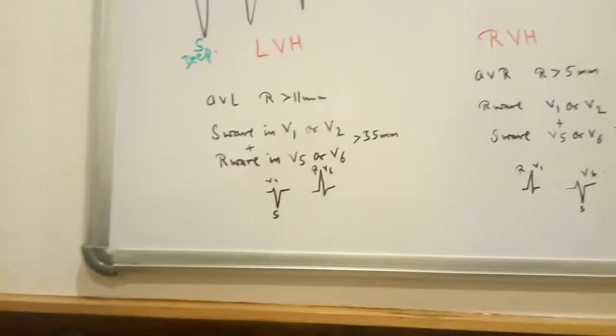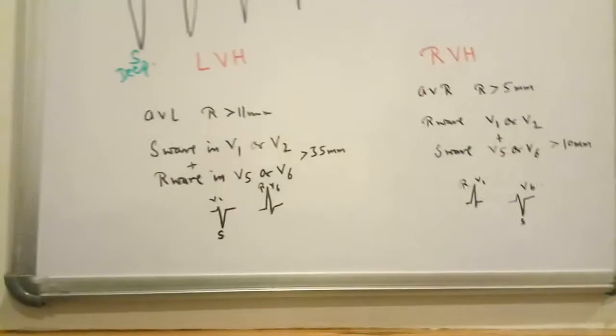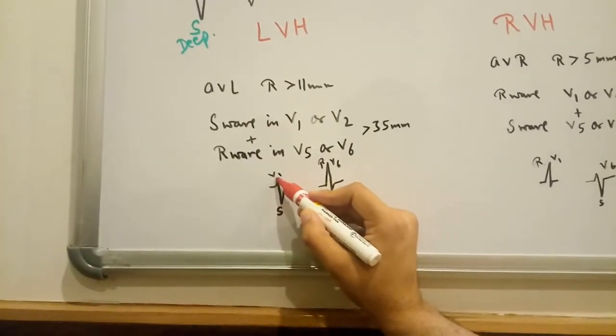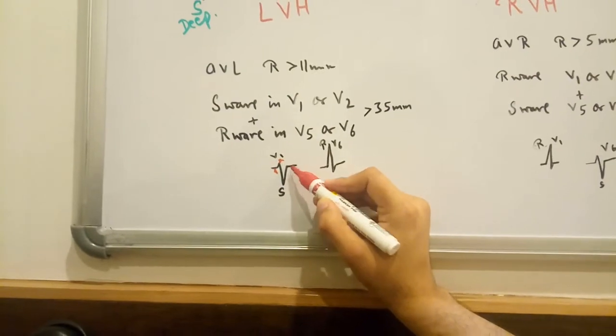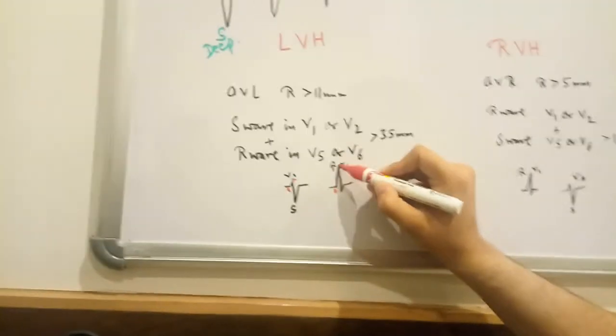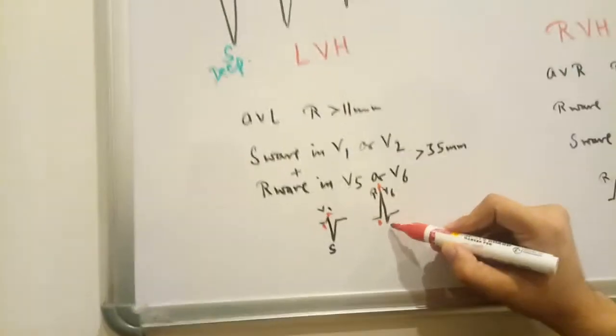And see what was going to happen. This lead, this is V1. This is R, this is Q, this is R, this is deep S. And then, and here it is Q. This is larger R in V6.